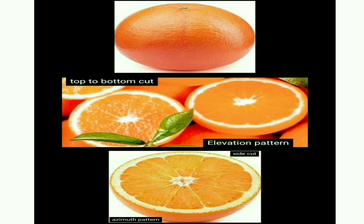Before we learn about omnidirectional antennas, we should know two important angles in the spherical coordinate system: the elevation angle and the azimuthal angle. Consider an orange — if we cut the orange in the middle from side to side, the circle that we get represents the azimuthal angle, and the angle from the top of the orange all the way down is known as the elevation angle.